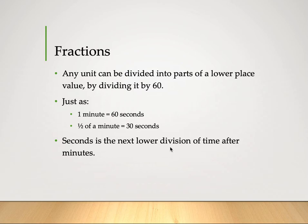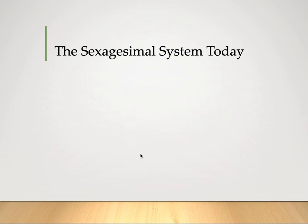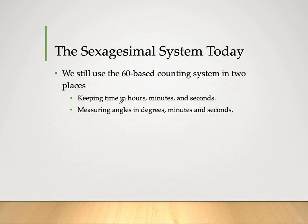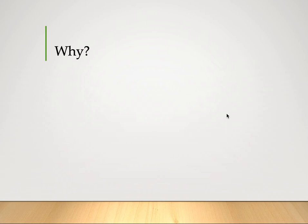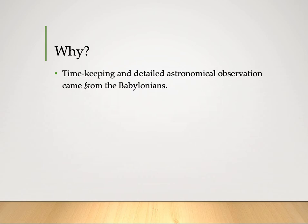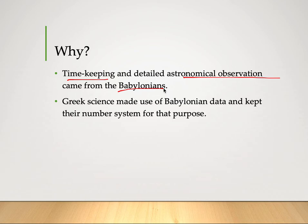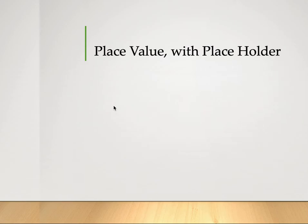So we can divide any unit into parts of a lower place value by dividing by 60. The sexagesimal system is still used today in two places: keeping time in hours, minutes, and seconds, and measuring angles in degrees, minutes, and seconds. Timekeeping and detailed astronomical observation came from the Babylonians. Greek science made use of Babylonian data and kept their number system for those purposes.